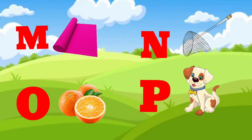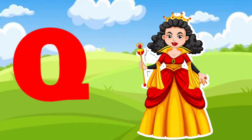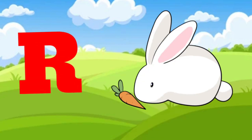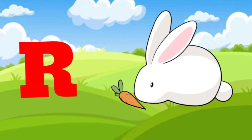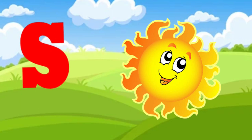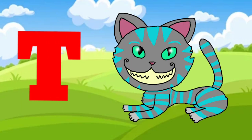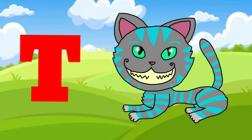Q is for queen, q-q-queen. R is for rabbit, r-r-rabbit. S is for sun, s-s-sun. T is for toad, t-t-toad.